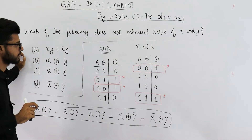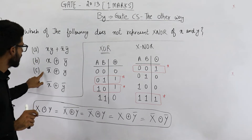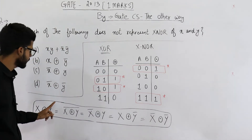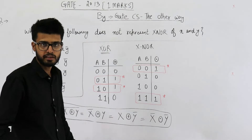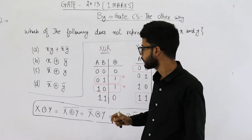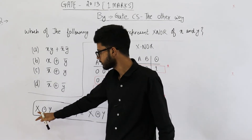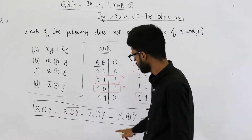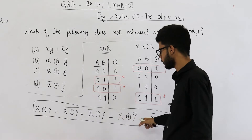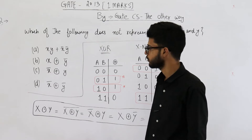Option A cannot be the answer. Options B and C are also representing X-NOR only. In my theory lectures I provided two formulas, one for X-NOR and one for X-OR. From here you can see X-NOR of X and Y equals X complement X-OR Y. Also it's equal to X X-OR Y complement. So B and C also represent the X-NOR gate.